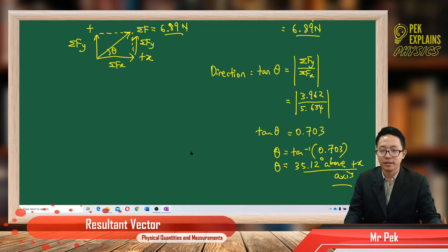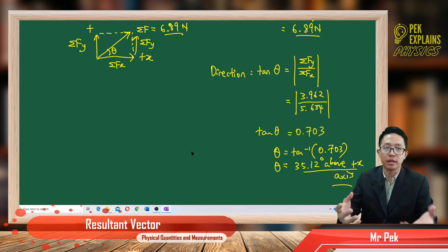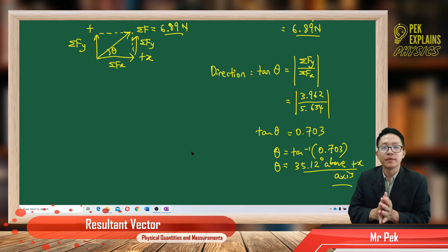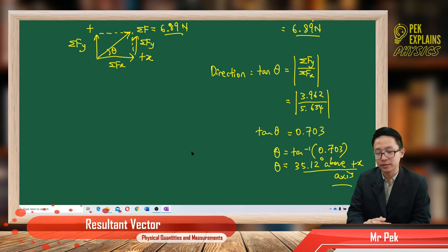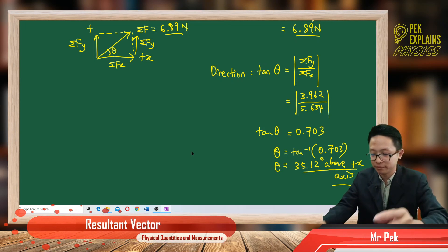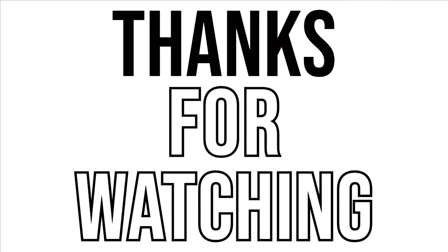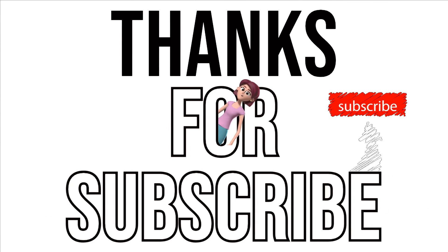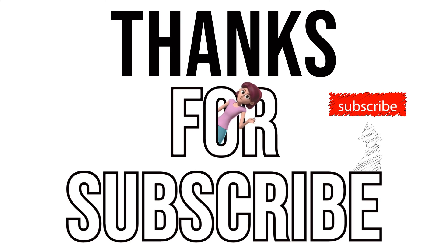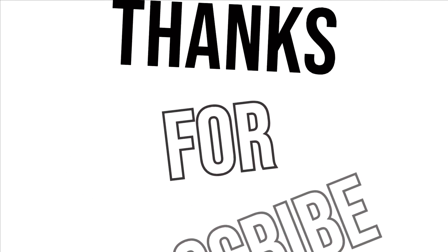So that's all — that is the magnitude and direction of the resultant vector. I hope you enjoy the lesson. Don't forget to hit the subscribe button and the bell button. I hope you stay tuned for the next upcoming videos. Thank you for watching. We'll see you next time.